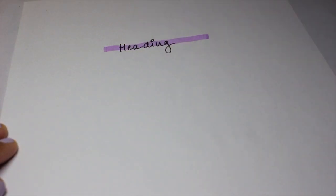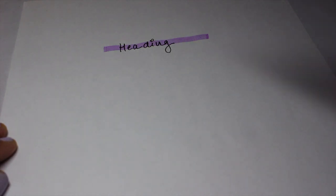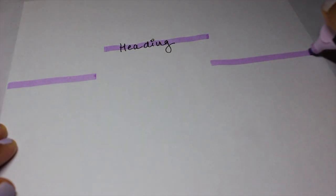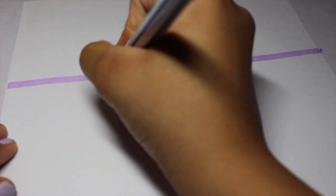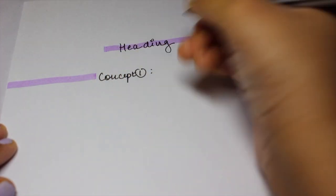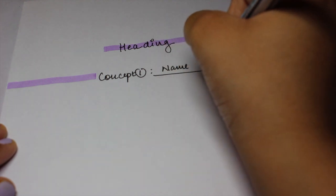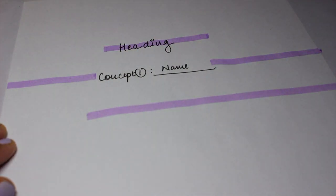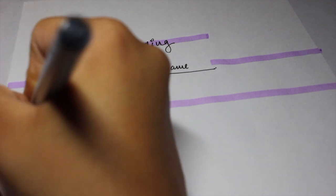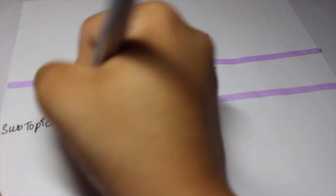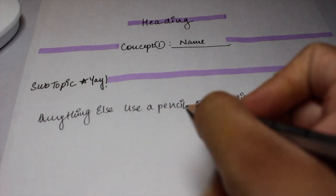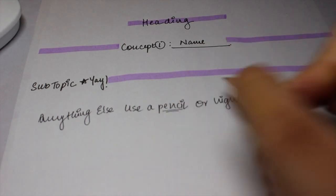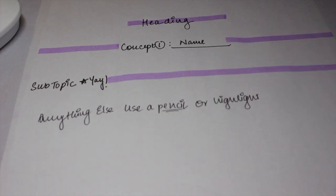For heading, I first make a straight line in the column with my highlighter, wait for it to dry, then write the heading part. For concept, I leave a gap between the straight line and write the concept name and number in that gap. If there is a subtopic, write the subtopic and then make a further line with the highlighter.